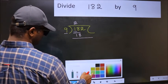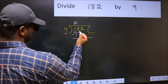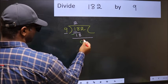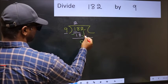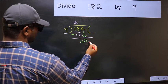Now, you should subtract. 18 minus 18 is 0. After this, bring down the beside number. So, 2 down.